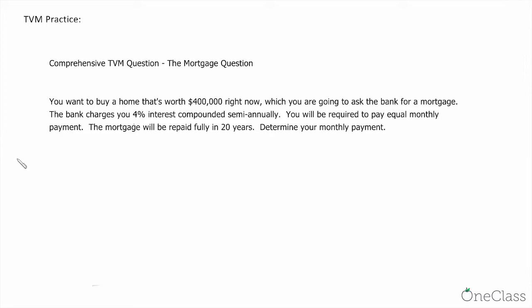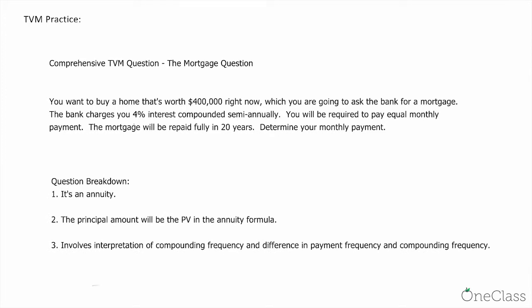First let's have a breakdown of the question. Here's the question breakdown. Number one, it's an annuity, because you're making equal period payments, which is monthly payment, and there's a time limit, which is 20 years.